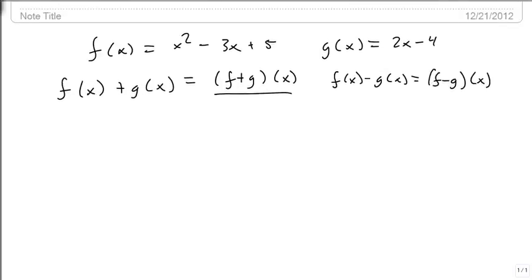So we're going to come in and we're going to add x squared minus 3x plus 5, that's f of x. So we're going to find f plus g of x. We're going to add to that 2x minus 4.